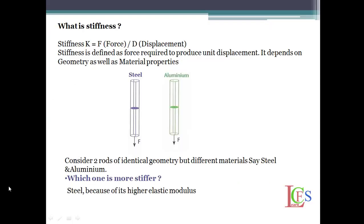What is stiffness? We know that stiffness is equal to force per unit displacement. Generally, k is equal to f by delta, that is displacement. Stiffness is defined as force required to produce unit displacement. Stiffness is force per unit displacement.